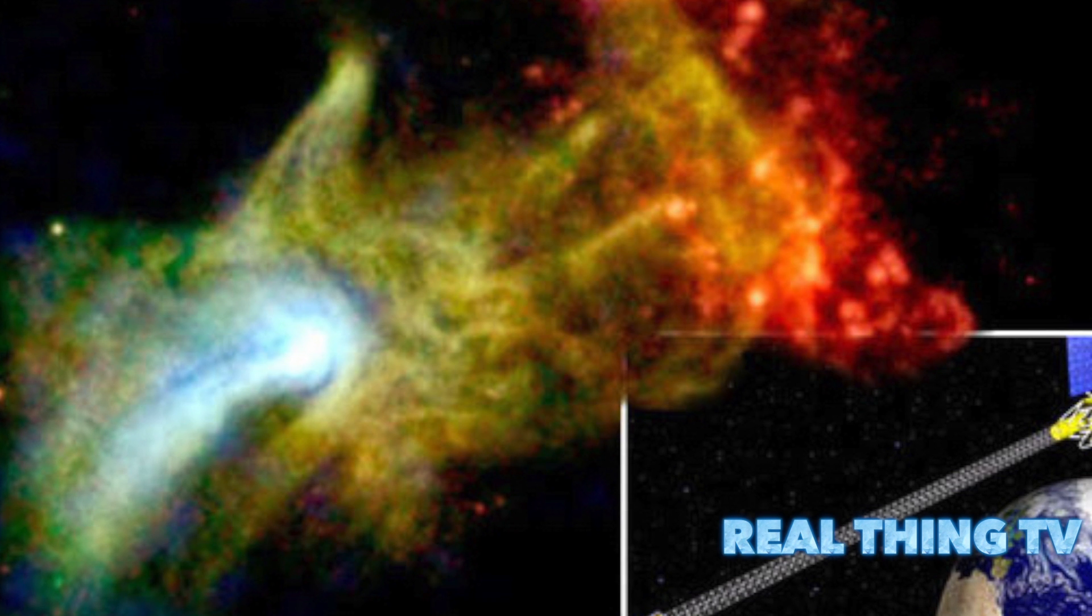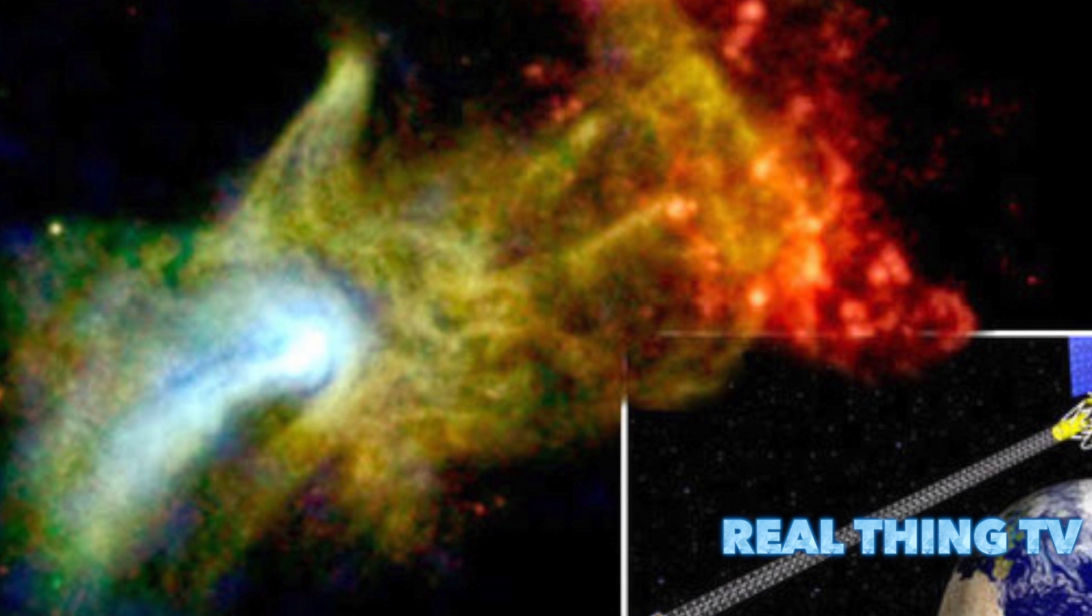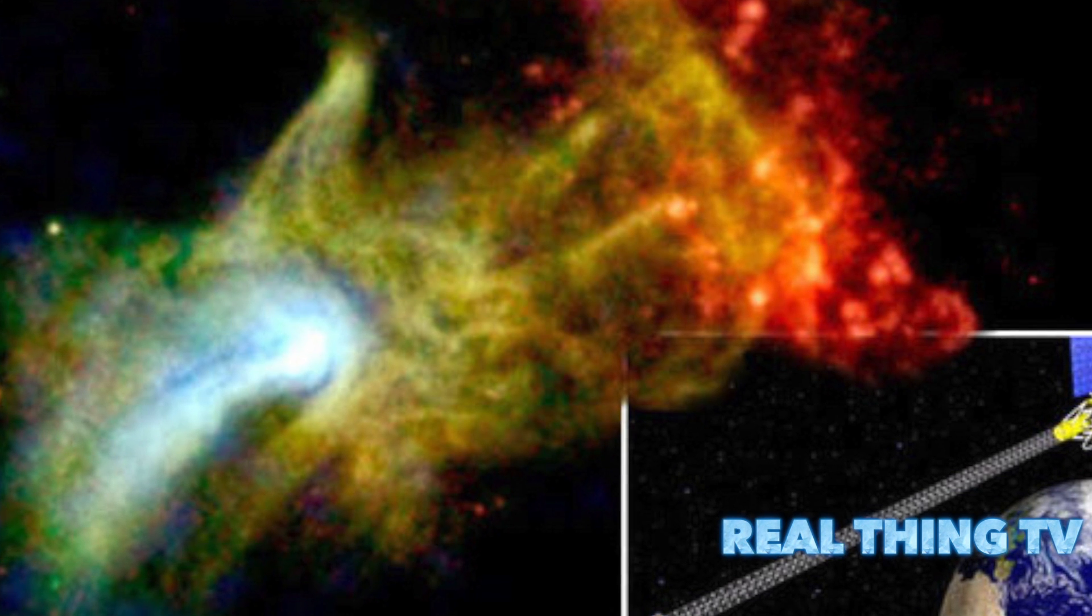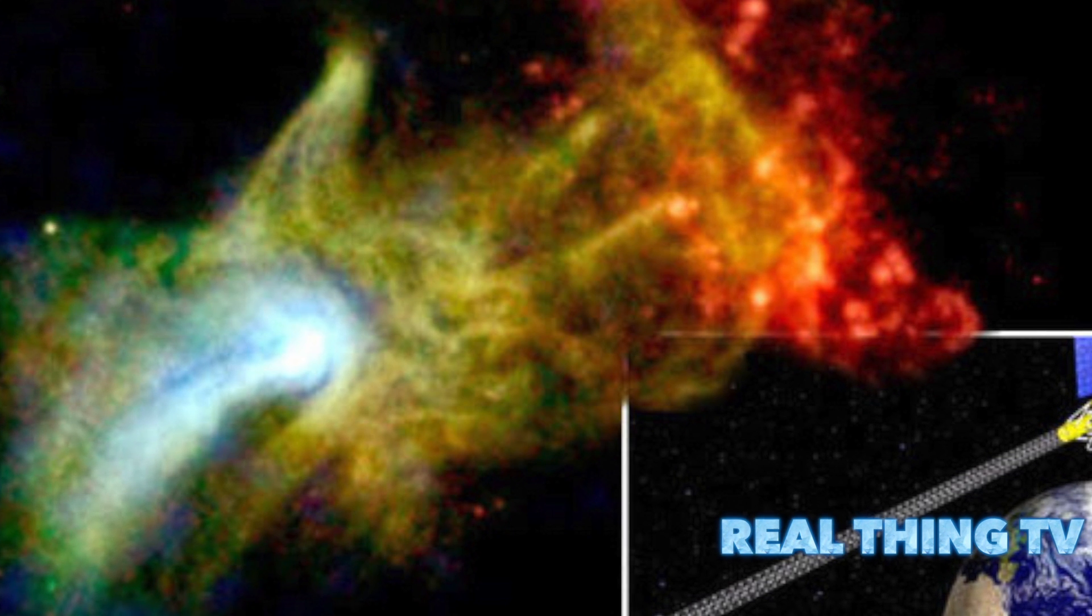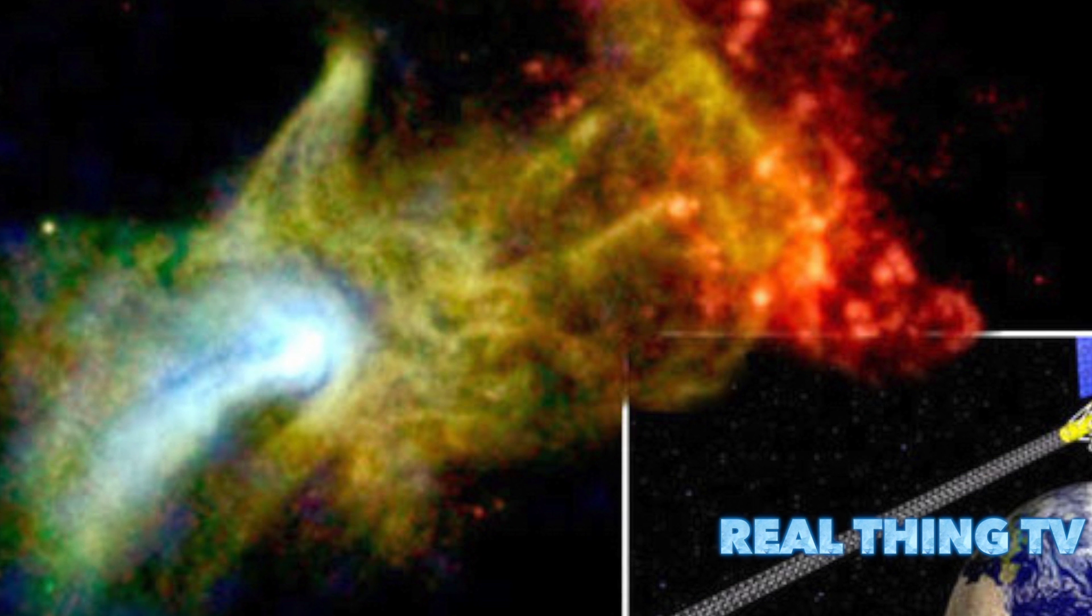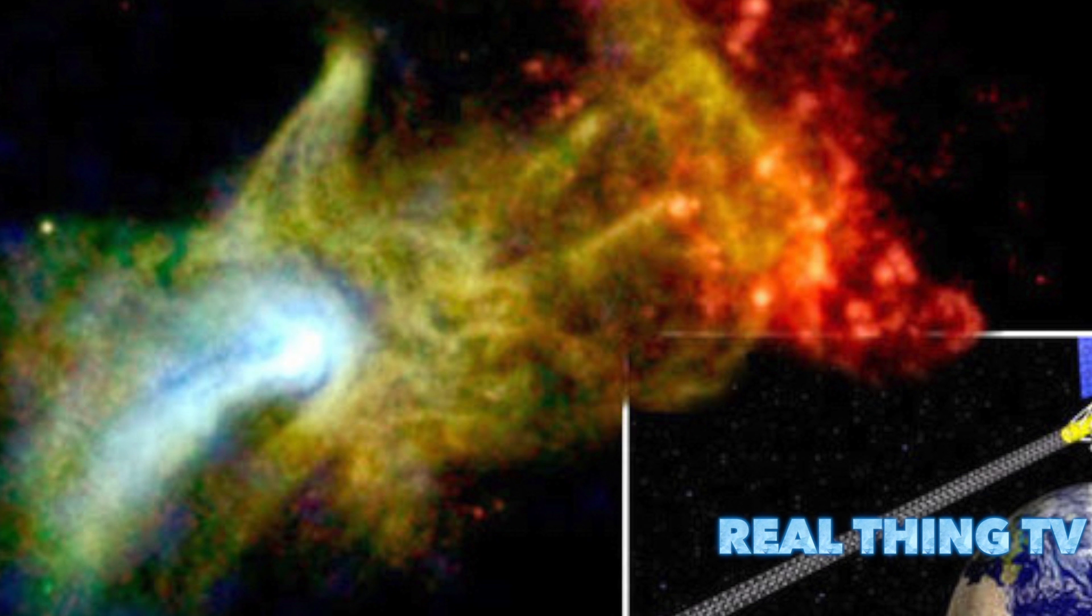The new image depicts a pulsar wind nebula produced by the dense remnant of a star that exploded in a supernova. What's left behind is a pulsar called PSRB 1509-58, or B1509 for short, which spins around seven times per second, blowing a wind of particles into material ejected during the star's death throes.